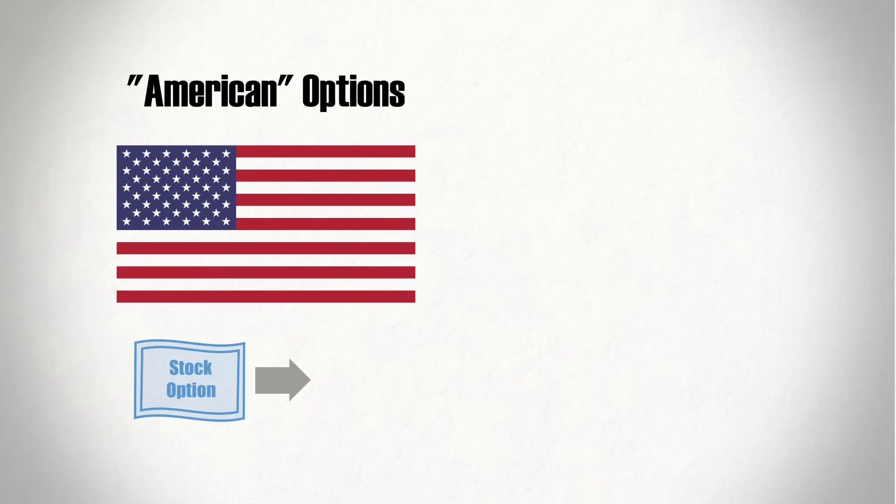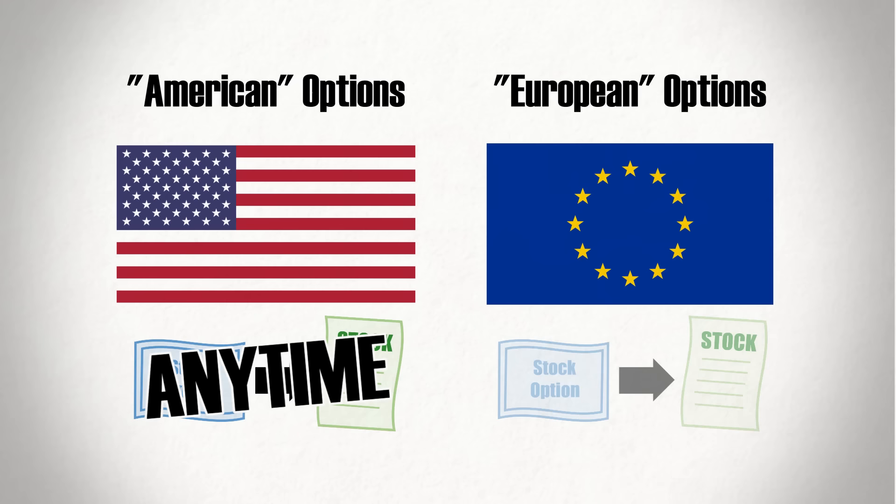But there's an important nuance to recognize here regarding when you can actually use an option. Options sometimes have different rules over their timing. American options allow the holder to buy or sell the underlying share anytime until their expiration date has passed, whereas European options can only carry out the trade on the expiration date itself.